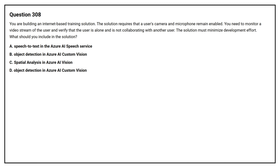Question number 308. You are building an internet-based training solution. The solution requires that the user's camera and microphone remain enabled. You need to monitor a video stream of a user and verify that the user is alone and is not collaborating with another user. The solution must minimize development effort. What should you include in the solution?